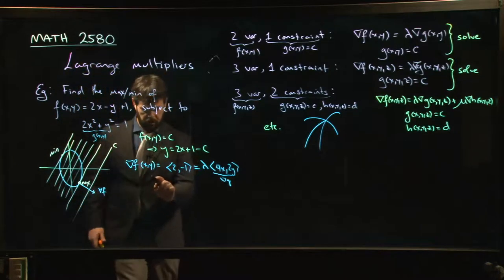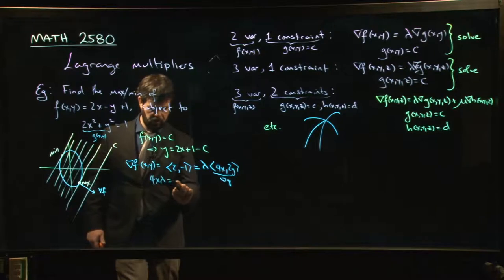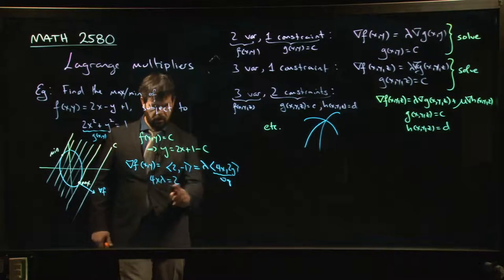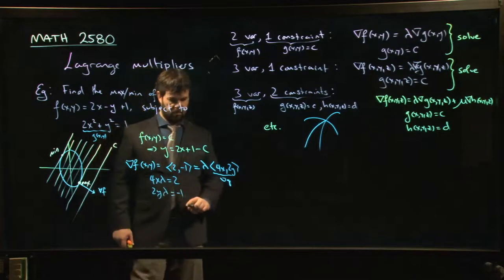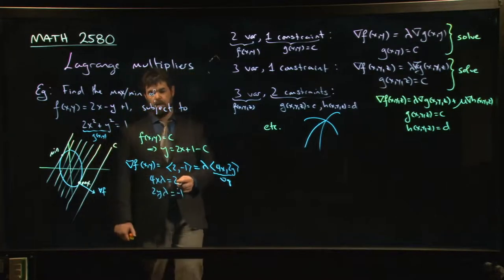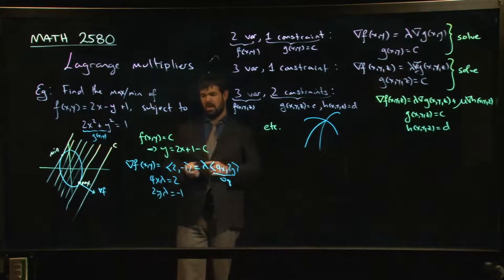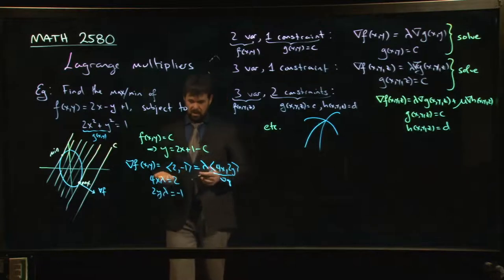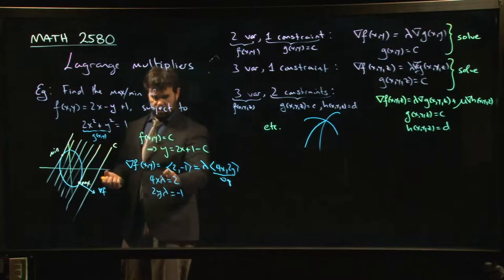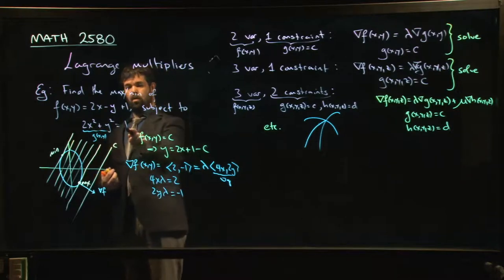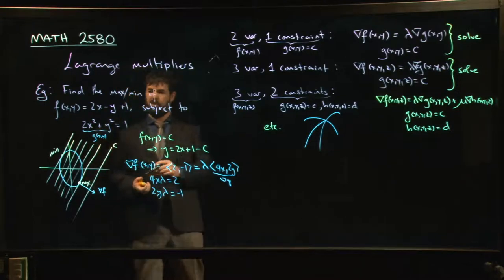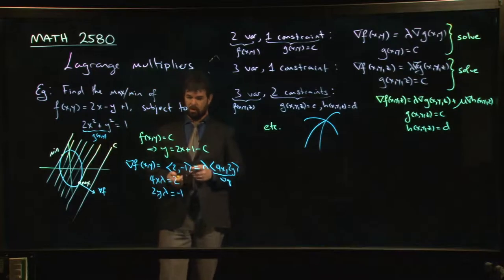So I need 4 times x times lambda should be 2, and 2 times y times lambda should be equal to minus 1. And now you've got to think about how do you actually solve these equations. You've got one, two, three variables, two equations. You do have one more equation in your back pocket, which is the constraint equation that you started with.